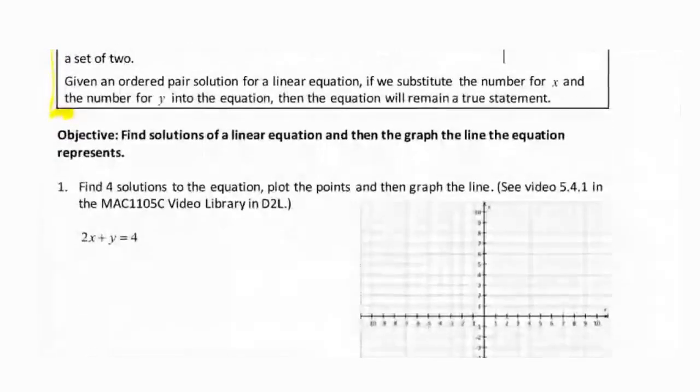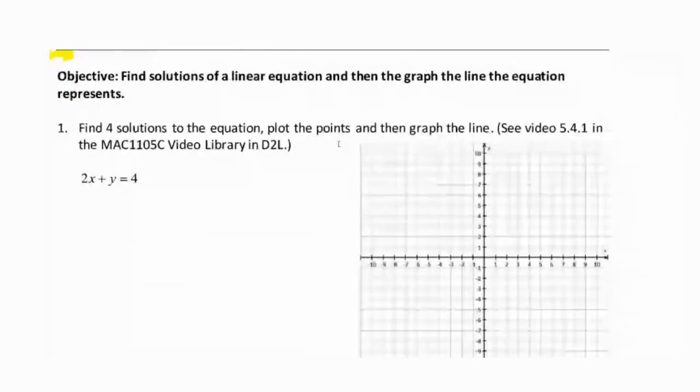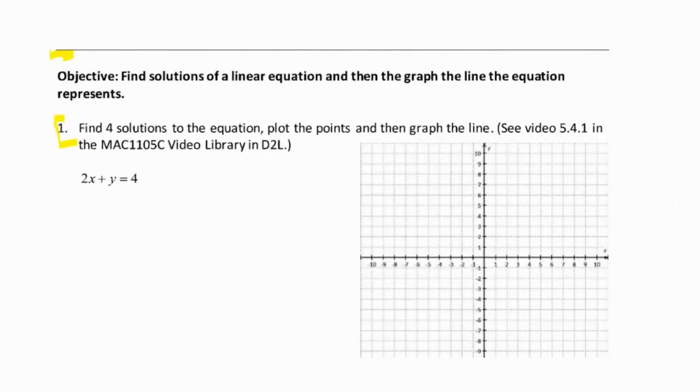Now the thing about these linear equations in two variables is they have an infinite number of ordered pairs that make the equation true. We're going to find four solutions to this equation. We're going to plot them as points on an xy coordinate system, and then we're going to connect them in order to graph the line. Graph the line means basically giving a drawing that represents all of the solutions. We can't possibly list them all since they're an infinite number of solutions, but we can represent the solutions on a graph.